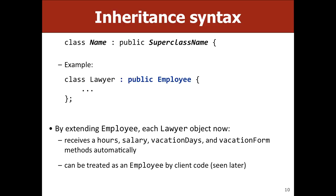In C++, the inheritance syntax looks like: class Lawyer : public Employee. The colon can be read as 'extends' — Java uses that keyword, C++ used a colon for historical reasons. This means every Lawyer automatically gets hours, salary, vacation dates, and vacation form. You don't need to write those methods — they're just there. You get all that great functionality for free.